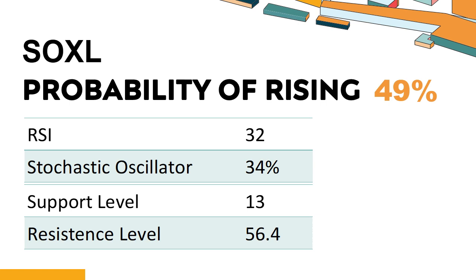SOXL's short-term support level is 21.9. If it falls below 21.9 during the session, it will have a chance to test 13. SOXL's short-term resistance level is 39.8. If it breaks through 39.8 during the session, it will look up to 56.4.